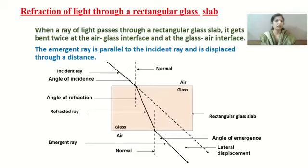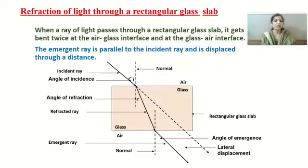The angle made by the incident ray with the normal is called the angle of incidence. The angle made by the refracted ray with the normal is the angle of refraction. The angle made by the emergent ray with the normal is the angle of emergence. So three angles are marked in the figure.